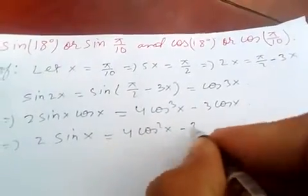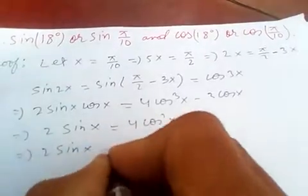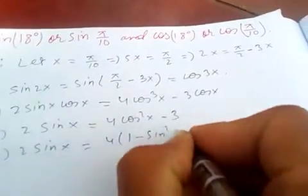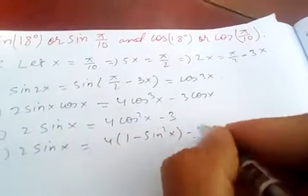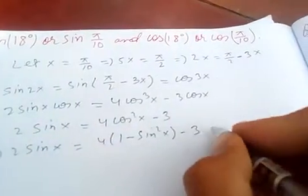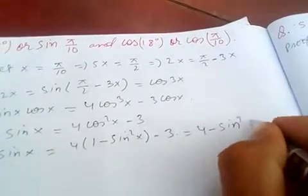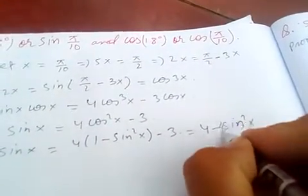Substituting cosine squared x equals 1 minus sine squared x, we get 2 sine x equals 4 times 1 minus sine squared x minus 3, which simplifies to 4 minus 4 sine squared x minus 3.